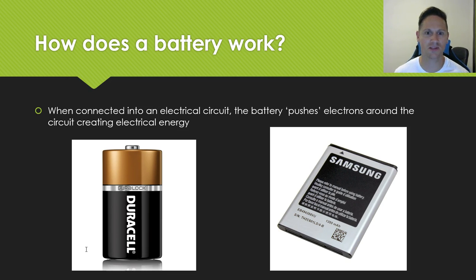So how does a battery work? Batteries are so awesome because we can use them to power our electronic devices. Every year, you get your phones and you want that to be updated with a faster and quicker battery. So when connected to an electric circuit, what a battery does is it pushes electrons around the circuit, which creates electrical energy. Electrons are very small negatively charged particles.